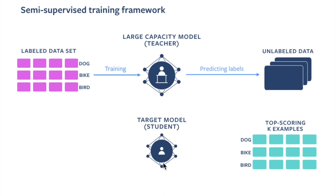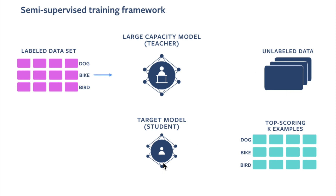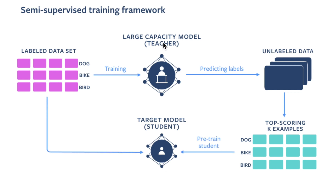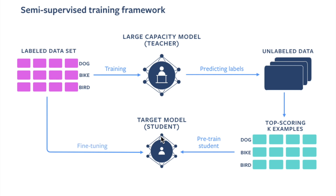One interesting thing we see here is the novel use of model distillation as semi-supervised learning — it's not common to use these two terms together. Also interesting is the model compression that arises: you can have a really high capacity teacher model like the ResNeXt-101 32x48D, then a lower capacity, faster inference model like ResNet-50 that you could deploy on mobile and IoT devices.